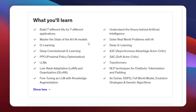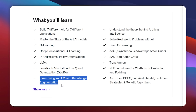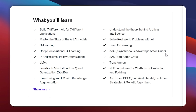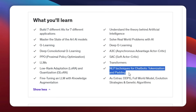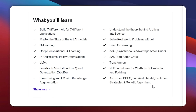State-of-the-art AI models. Q-Learning, Deep Q-Learning and Deep Convolutional Q-Learning. Proximal Policy Optimization. Large language models. Low-rank adaptation and quantization. Fine-tuning LLMs with knowledge augmentation. Asynchronous Advantage Actor-Critic and Soft Actor-Critic. Transformers and NLP techniques for chatbots. Tokenization and padding. DDPG full world model. Evolution strategies and genetic algorithms. And of course there is much more — you can already see there is some serious knowledge to pick up here.